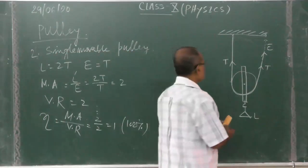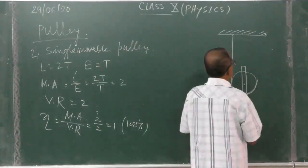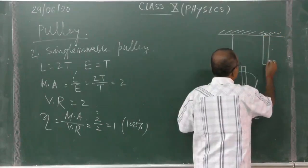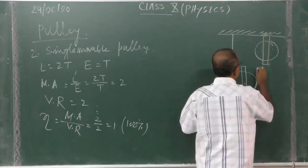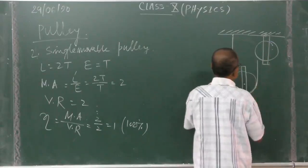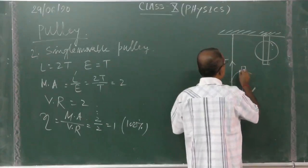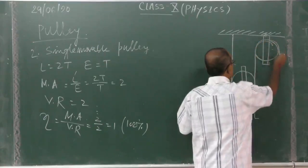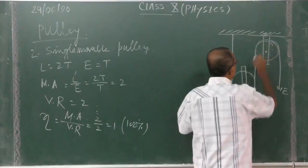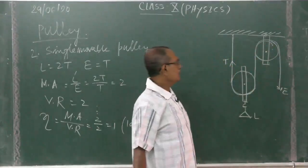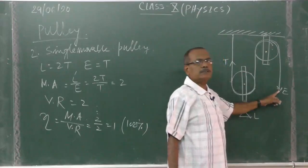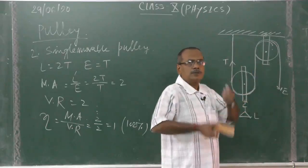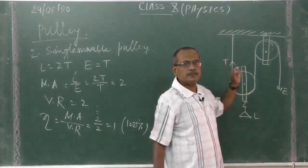Now we can add here another pulley, another fixed pulley. If you are doing in this way, there is another fixed pulley, so due to that what happen, we are changing the direction of effort. So this is easier than the previous one. Pulling down is easier than pulling up.